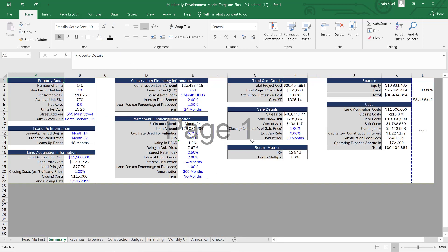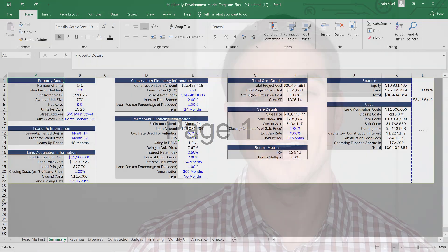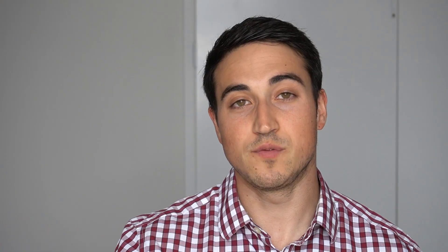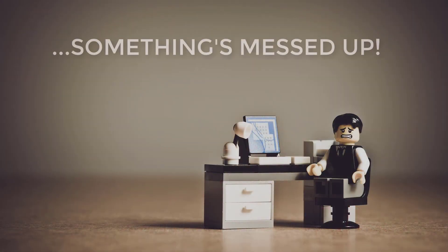Number three is probably the most tricky, and this is when a manual error is lost in the model. Say you're building a model or adding some inputs and you've done some work over 30 minutes or an hour, and then you realize something's messed up — something's not working. What do you do? You can't just hit Undo because you've done all of this work.